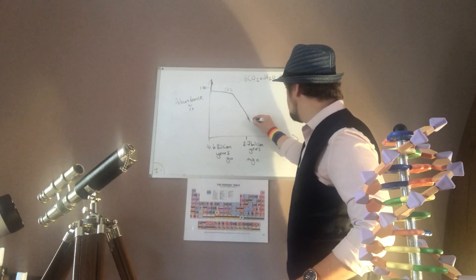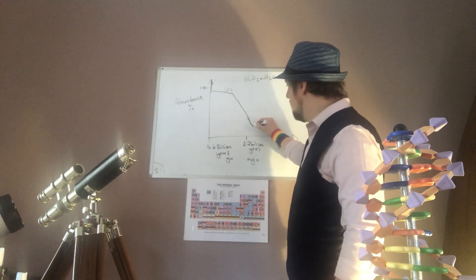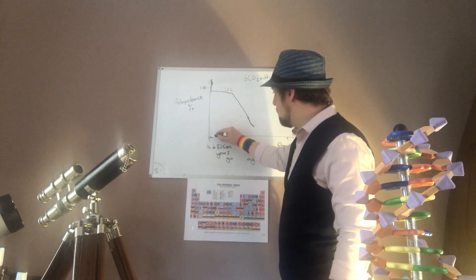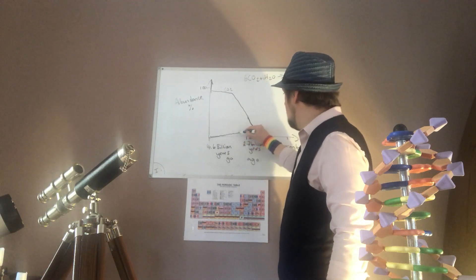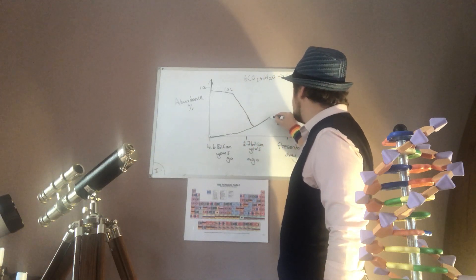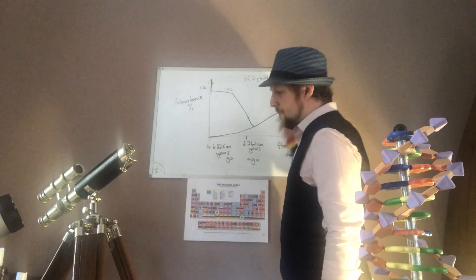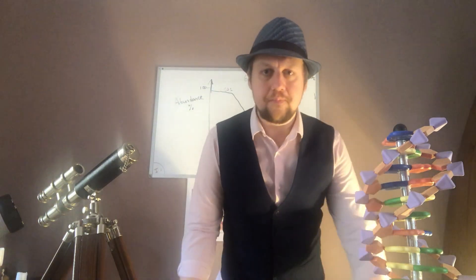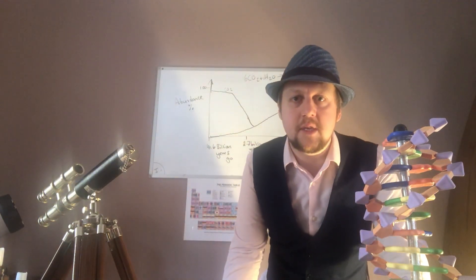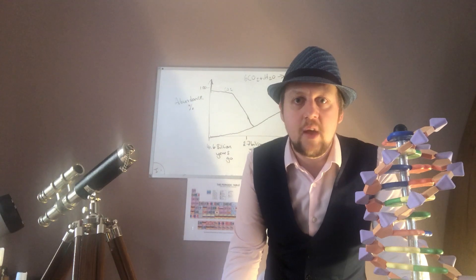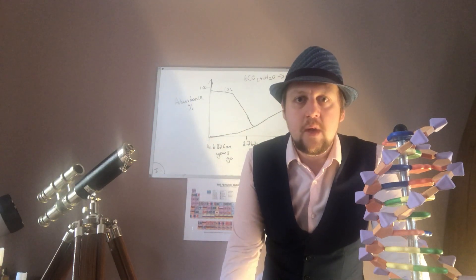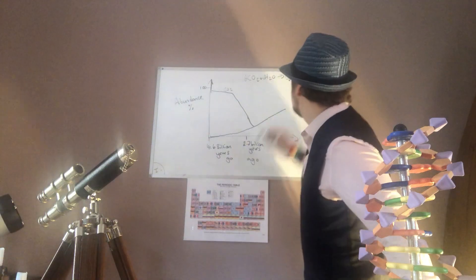These life forms started to photosynthesize. At the same time, where there was practically zero oxygen, the oxygen levels on Earth started to creep up, again in the oceans. Photosynthesis - very important process - takes in carbon dioxide.